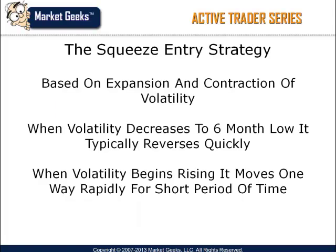I've used Bollinger Bands many different ways over the years with positive results. One particular Bollinger Bands strategy that I use when volatility is decreasing in the markets is the squeeze entry strategy. It's a very simple strategy and works very well for stocks, futures, foreign currencies, and commodity contracts. The squeeze strategy is based on the idea that once volatility decreases for extended periods of time, the opposite reaction typically occurs and volatility greatly increases once again. When volatility expands, markets usually begin trending strongly in one direction for a short period of time.